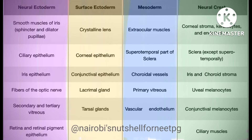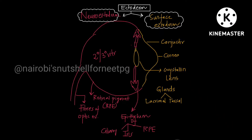Let us learn about the embryological derivatives of the eye. In the previous video I dealt with the embryological derivatives of the ear. Now it's the part of the eye. The eye basically develops from four different layers: neuroectoderm, surface ectoderm, mesoderm, and neural crest cells. Let us dissect each part individually and learn one step at a time.